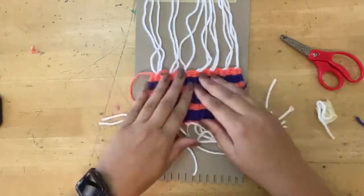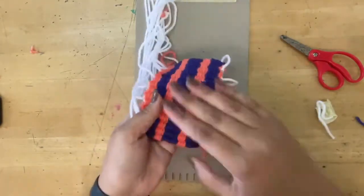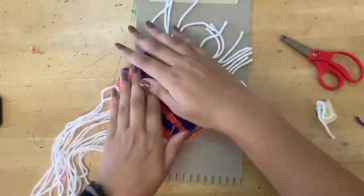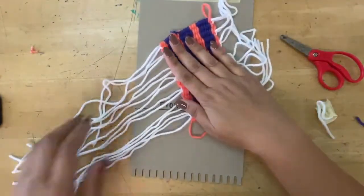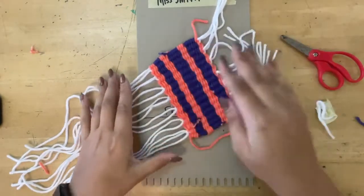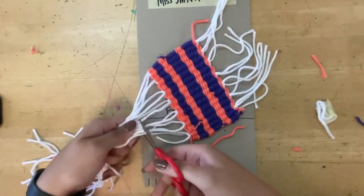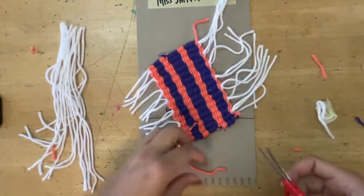Perfect. What those knots do is it holds your weaving in place, so it's not going anywhere. Last thing you're going to do is trim your tassels to the length that you want them. Now, keep in mind, this is going to be sitting underneath your mug. If you want them long, you can have them long. If you want them short, you can have them short. It's really up to you.